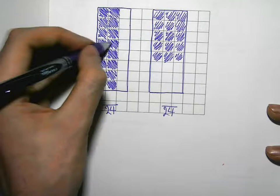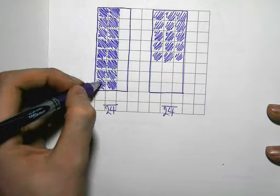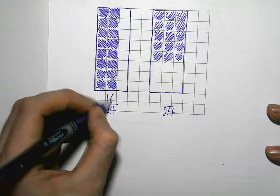This one has 1, 2, 3, 4, 5, 6, 7, 8, 9, 10, 11, 12, 13, 14, 15, 16 coloured in.